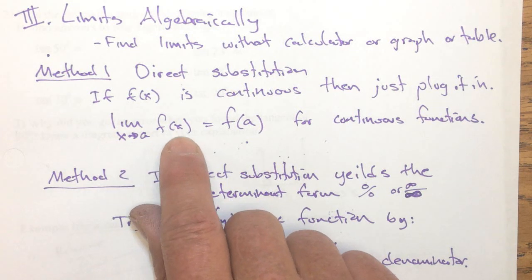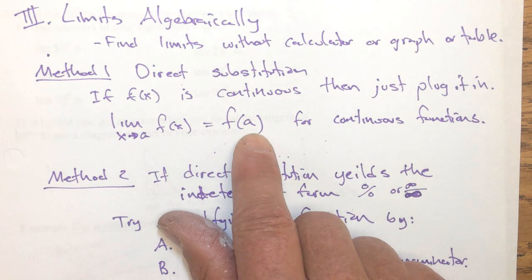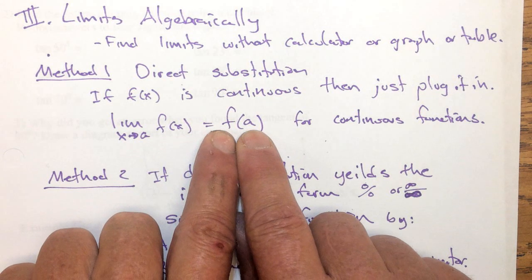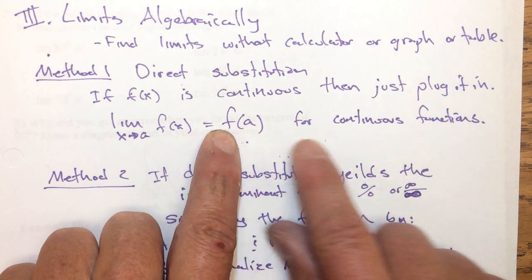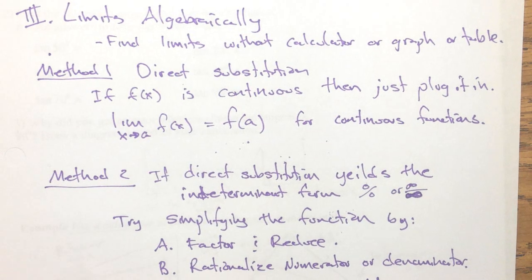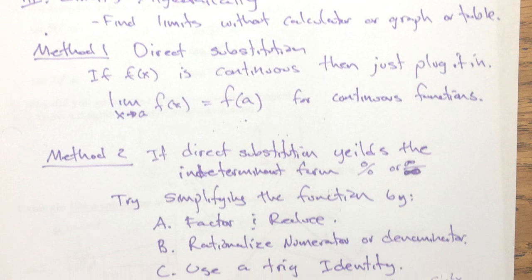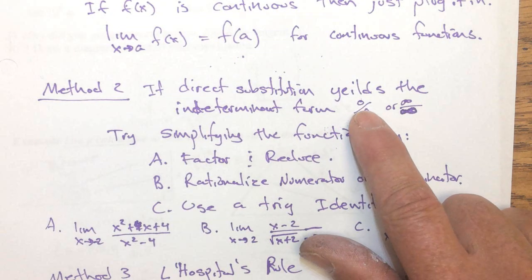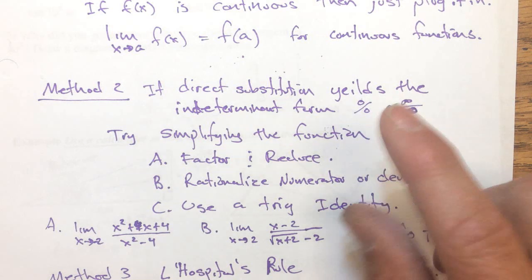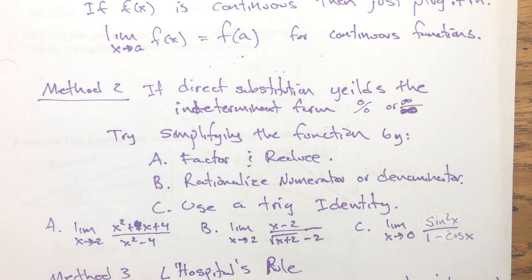So, the limit as x approaches a of f(x) equals f(a) just means that to evaluate this limit, I'm plugging in my x value. And this works for continuous functions. If it's not continuous, we might get one of these indeterminate forms like zero over zero. Now, like I said, three divided by zero is not indeterminate. That's actually undefined and the limit doesn't exist. It might go to infinity or something.